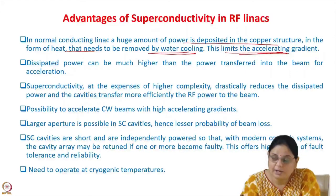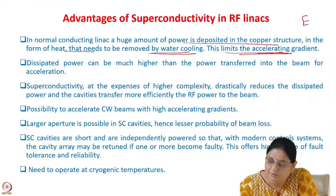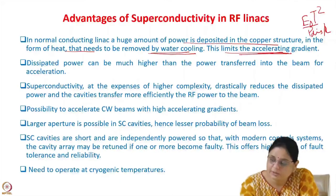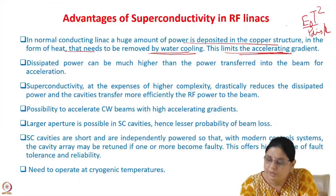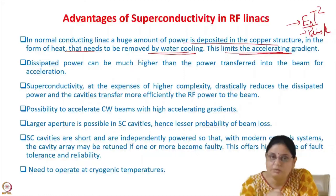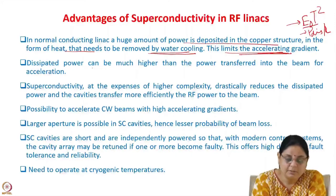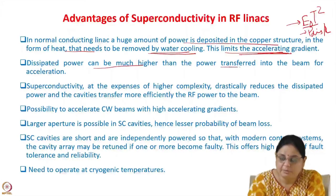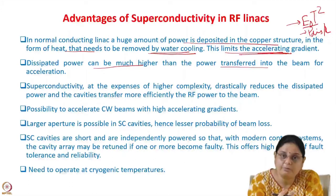How high a gradient you can achieve depends on how much heat you can remove. The shunt impedance, which is E₀T² divided by power dissipated per unit length, is fixed for a given cavity. So if you increase the accelerating field, the power dissipation will also increase, and the dissipated power can be much higher than the power transferred into the beam for acceleration. A lot of RF power is wasted in normal conducting operation.